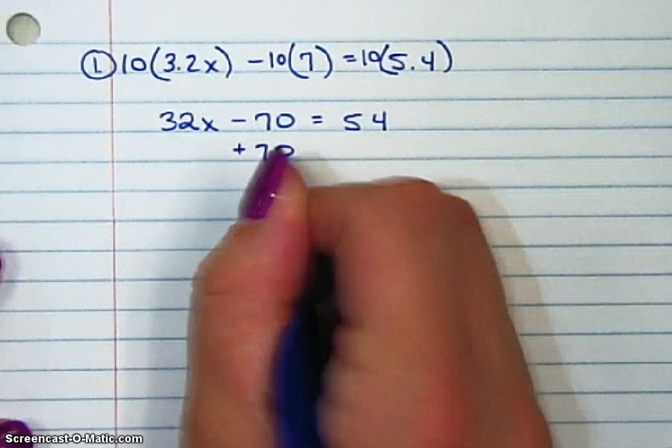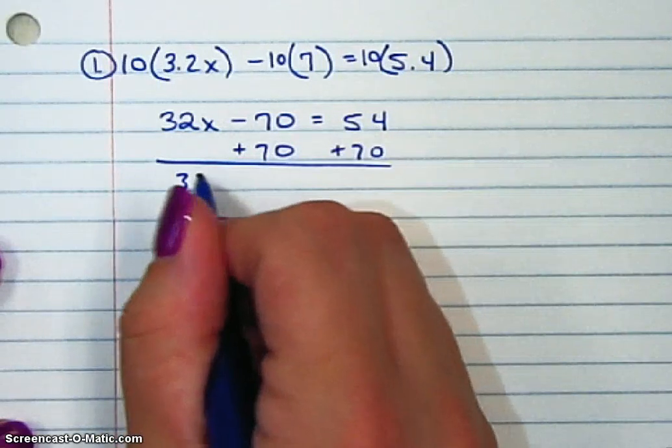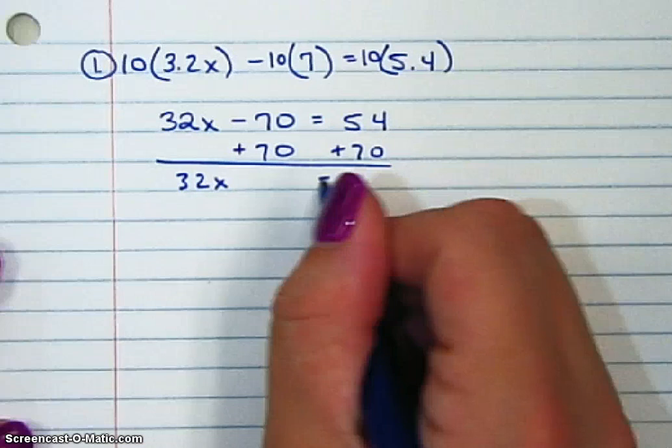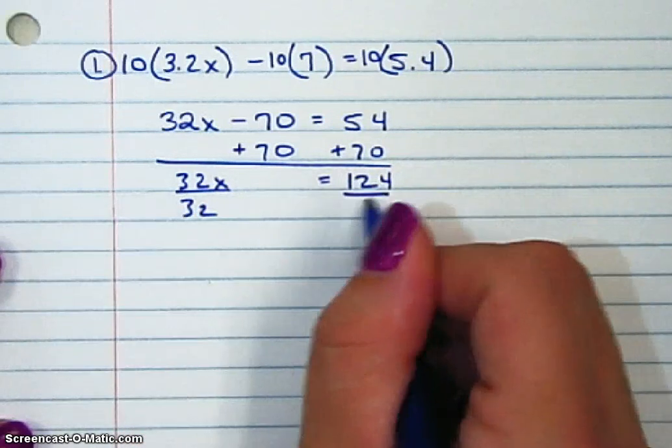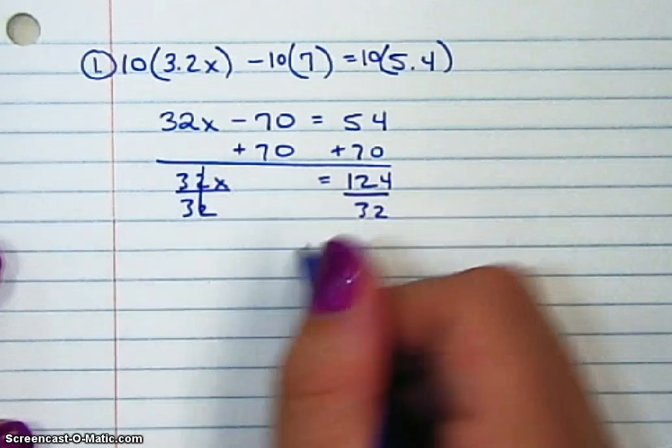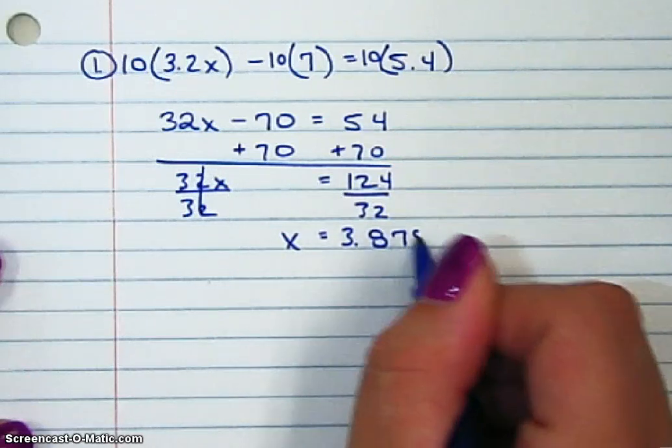Then I'm going to add 70 to both sides. Now you'll notice, this is a much easier problem to deal with than all those nasty decimals. So when I divide by 32, x equals 3.875.